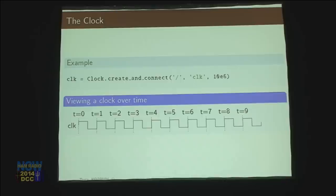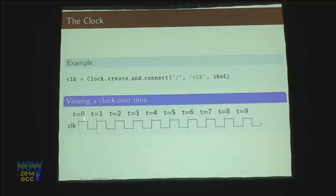When we make stuff with transistors, we're going to worry about things that we can do when the clock goes up, called the positive edge, or things that we can do when the clock goes down, called the negative edge. So there's this rhythmic event that's going to happen constantly that we can hook onto to make our system work.